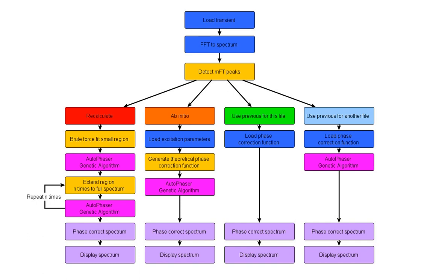Once you've successfully phase corrected a file to absorption mode, you can then save the phase correction function to a small file known as a phase correction function or PCF file, that will store the parameters of that phase correction function so you can reuse it. Autovectus will save this PCF file in either the same folder that the file exists in, or if it's a Bruker .d file, actually inside that file. There are then two different ways that Autovectus can reuse the information stored in these PCF files.